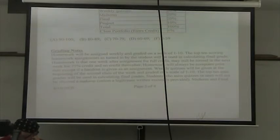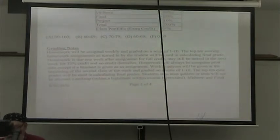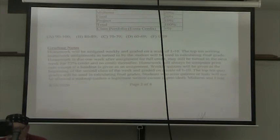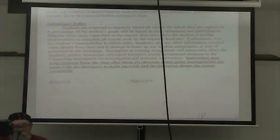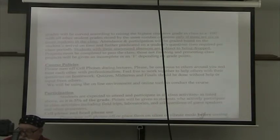Homework may still be turned in the next week for 75 percent credit and no credit thereafter. Homework will always be computer printouts except if a handout is given as an assignment. Weekly quizzes will be given at the beginning of the second class of the week and graded on a scale of 1 to 10. The top 10 quiz grades will be used in calculating final grades. Midterm and final grades will be curved according to raising the highest objective grade in class to 100, with all other student grades raised by the same amount of points, only if there are 6 or more students in the class.